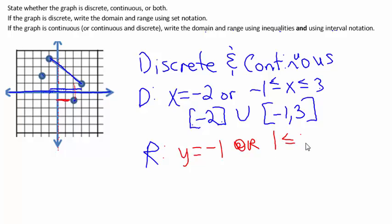So 1 is included in the y values and 4 is included in the y values, as well as all the stuff in between. This thing brings nothing to the range that wasn't already there on the segment.